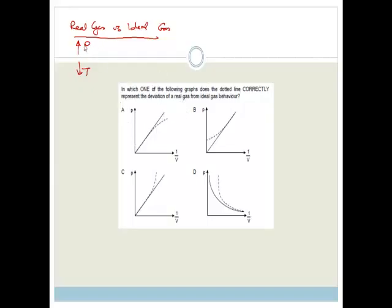It says, which of the following graphs does not, does the dotted line correctly represent the deviation of the real gas from an ideal gas? So what do we know? We've got real gases versus ideal gases. And when does this not happen? When does a real gas not look like an ideal gas? It would be at high pressures. It would be at low temperatures. At high pressures and low temperatures, it doesn't look like an ideal gas. So, now we don't have pressure, we've just got pressure and volume. We'll worry about that in a minute. So, we're staying at high pressure.